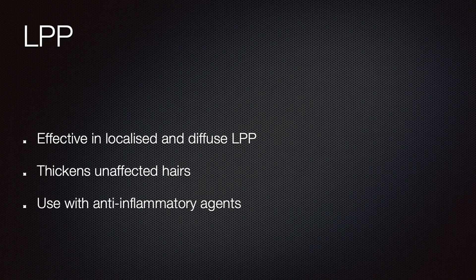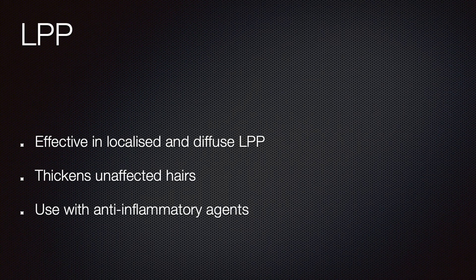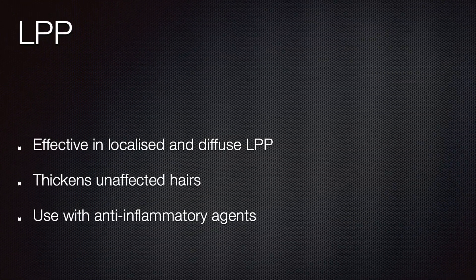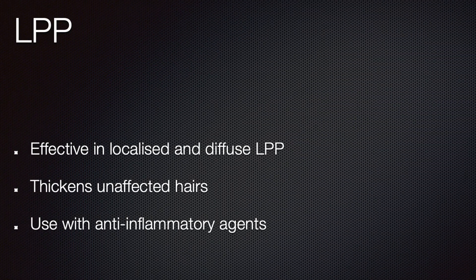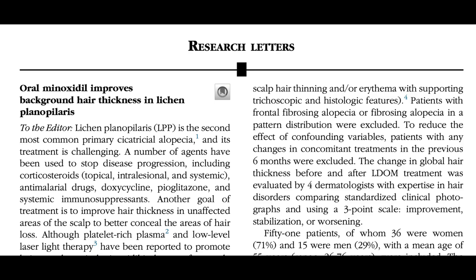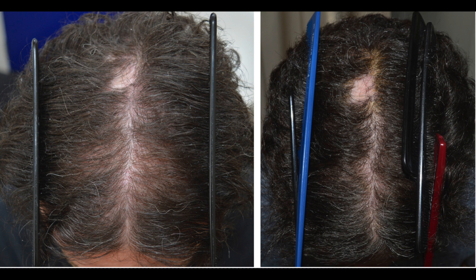Taking lichen planopilaris alone, which is probably the commonest scarring alopecia we see in practice: it seems effective whether localized or generalized, and has a thickening effect on unaffected hairs, thereby masking the alopecia area. It can be used with other anti-inflammatory agents — most commonly hydroxychloroquine. A case report in the American Academy of Dermatology clearly showed improvement after addition of oral minoxidil. The patient was also on hydroxychloroquine and had received intralesional triamcinolone, so it was a combination that worked.